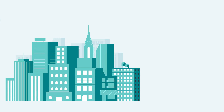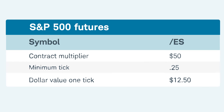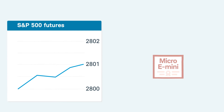Starting with the Micro E-mini S&P 500, this contract gives traders exposure to U.S. large cap stocks, a leading barometer of the U.S. stock market. Symbol /MES, this contract has a multiplier of $5 versus the $50 multiplier of the E-S. With a minimum tick of a quarter point, the dollar value of one tick is equal to $1.25, which means a full one-point move in the Micro E-S is worth $5.